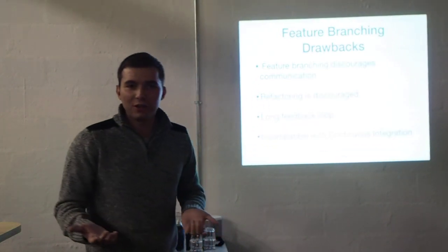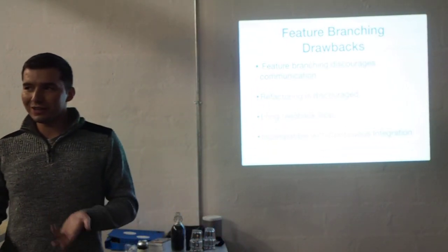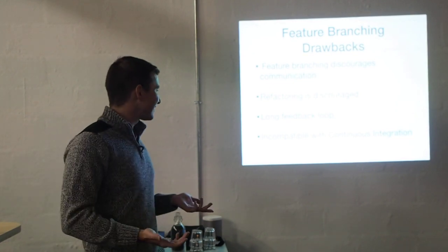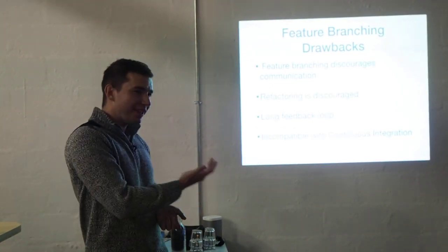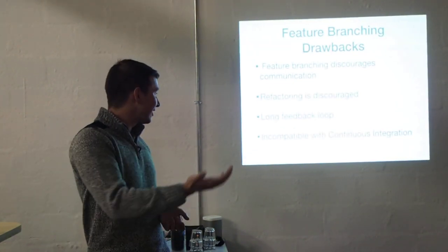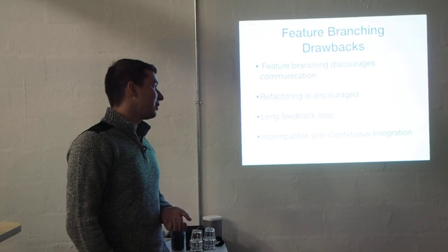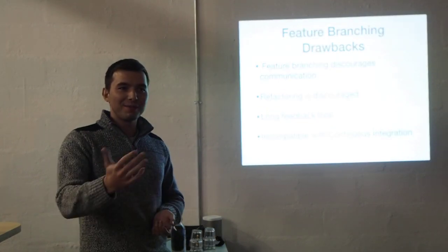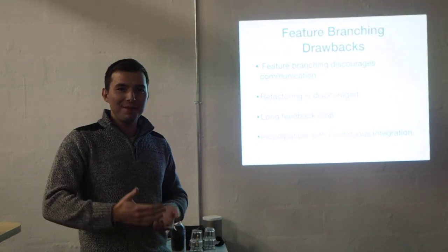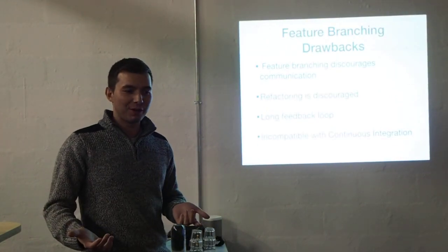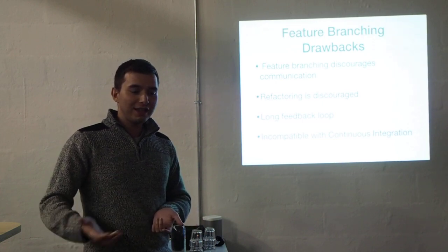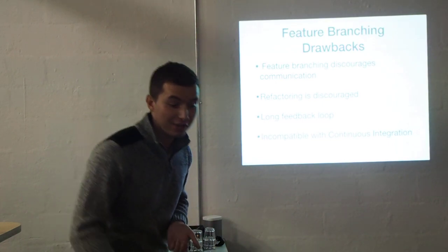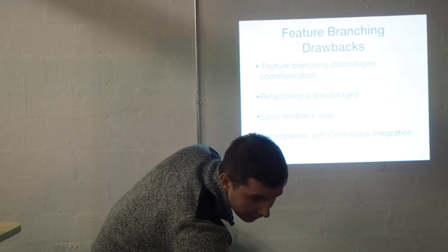Thirdly, the feedback loop is much longer than it needs to be. If I'm working on a feature for two weeks, that's a two-week feature branch — an incredibly long feedback loop. I only find out at the end, when there's a merge conflict, that I've been working on top of someone, or there's a code review. That's an unnecessarily long feedback loop that we can avoid pretty easily.